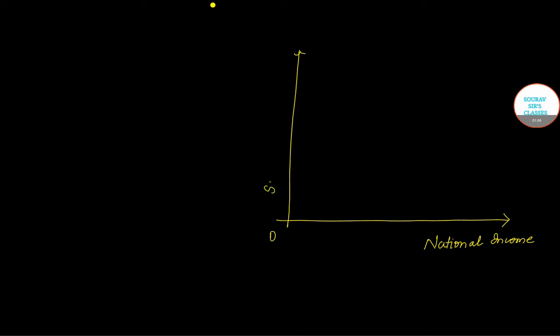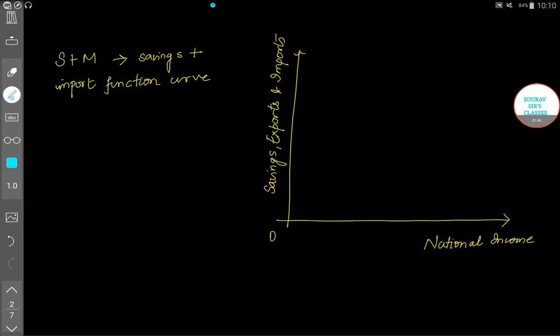On the vertical axis I'll be measuring three things. First is savings, then we have exports, and lastly I'll measure imports. Don't worry about investment - the assumptions we will undertake will take care of that. Now first we will draw the S plus M, which is the savings plus import function curve.